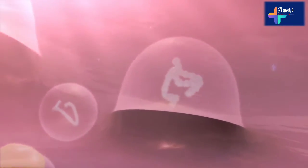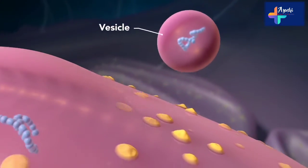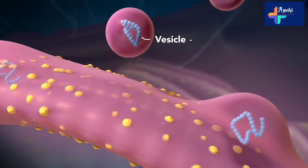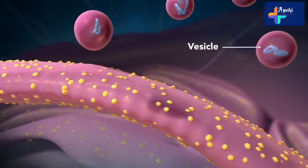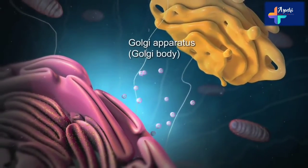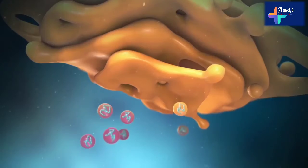Proteins and other materials emerge from the endoplasmic reticulum in small vesicles, where the Golgi apparatus, sometimes called the Golgi body, receives them.